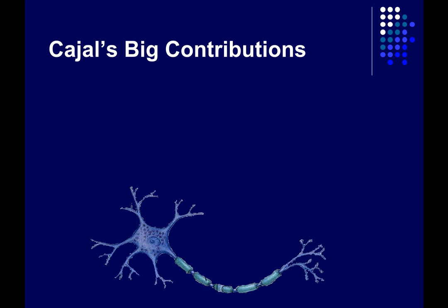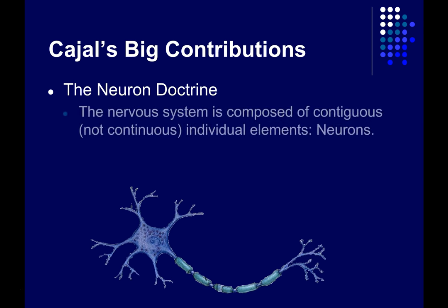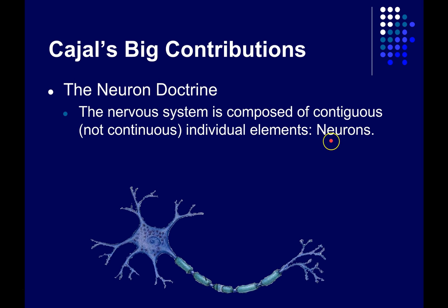Cajal made many important contributions to our understanding of the brain, but two he's most known for are the neuron doctrine. Up until Cajal, there was debate about how the brain was structured. Cajal and others believed the nervous system was composed of contiguous but not continuous individual elements — cells called neurons. When he looked at slides, he saw individual cells that were contiguous: where one ended, the next began. They were practically touching each other and communicating with each other.